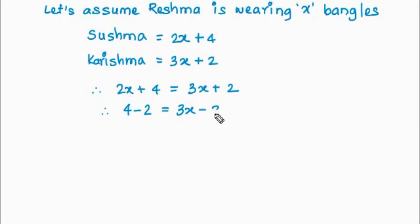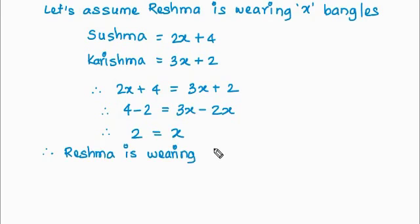Not changing its place. 2x is coming from here. So it is minus now, minus 2x. And therefore, 2 is equal to x. And hence, Reshma is wearing 2 bangles.